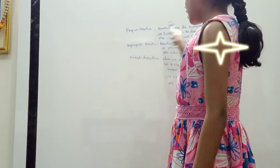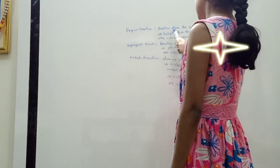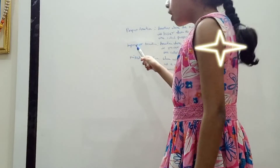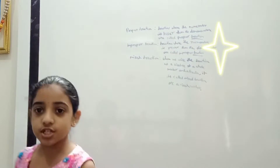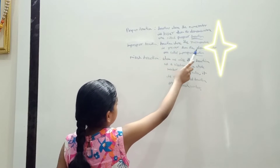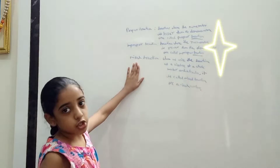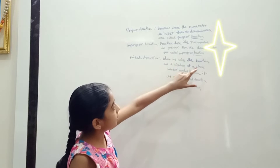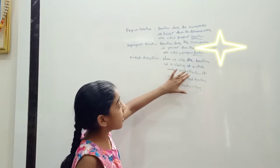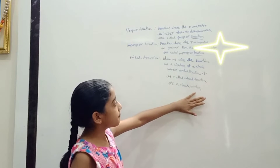Proper fractions: fractions where the numerator is lesser than the denominator are called proper fractions. Improper fractions: fractions where the numerator is greater than the denominator are called improper fractions. Mixed fraction: when we write a fraction as the mixture of a whole number and a fraction, it is called a mixed fraction or a mixed number.